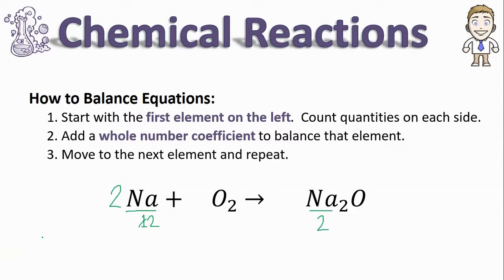The only thing to do now is move on to the next element and repeat. My next element in this equation is oxygen. O2 means there's two oxygen, so I'll put a two over here. There's only one oxygen, so they are not balanced.